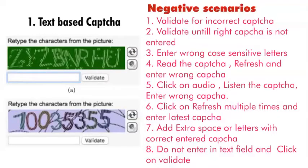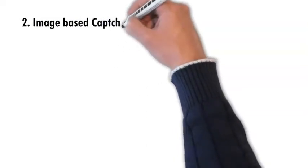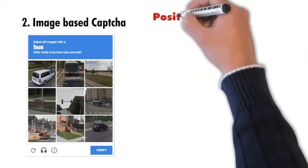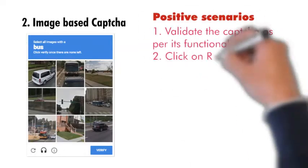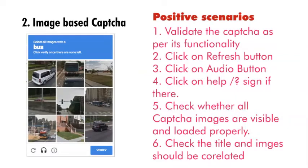Do not enter anything in the text field and click on validate — check whether you are getting any pop-up message. Now let's check image-based CAPTCHA. This is one image which you can see on various websites. The positive scenario is: validate the CAPTCHA as per its functionality — for example, click on the bus wherever you see a bus. Click on refresh, click on audio, click on help or question mark. Check whether all CAPTCHA images are visible and loaded properly.